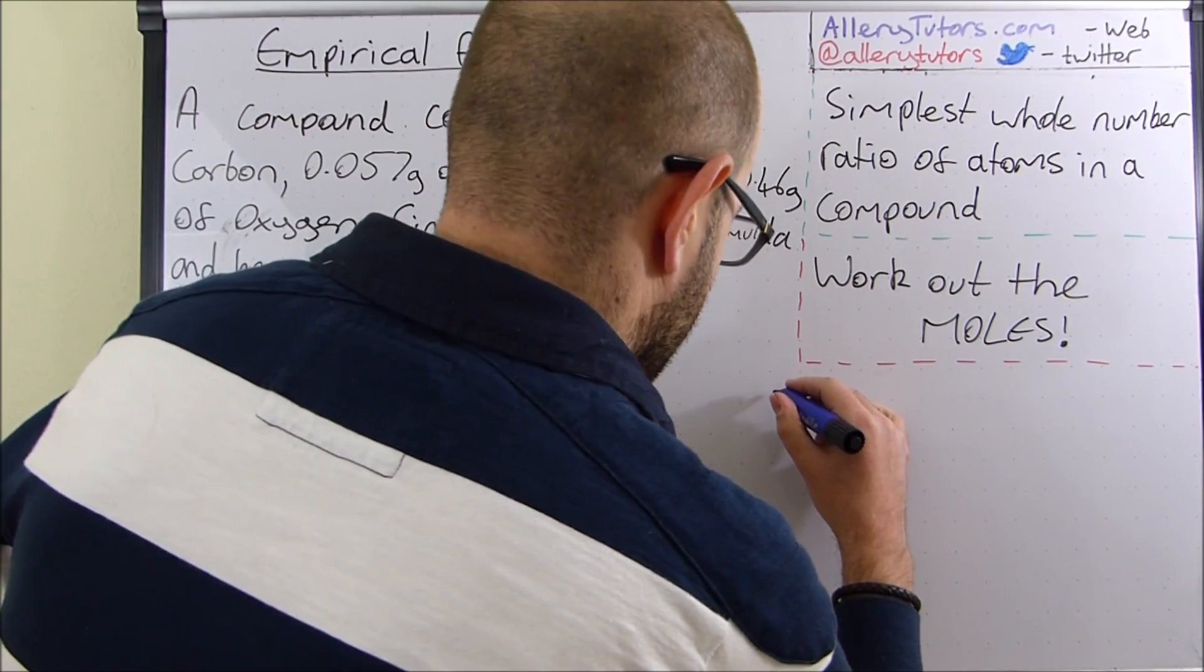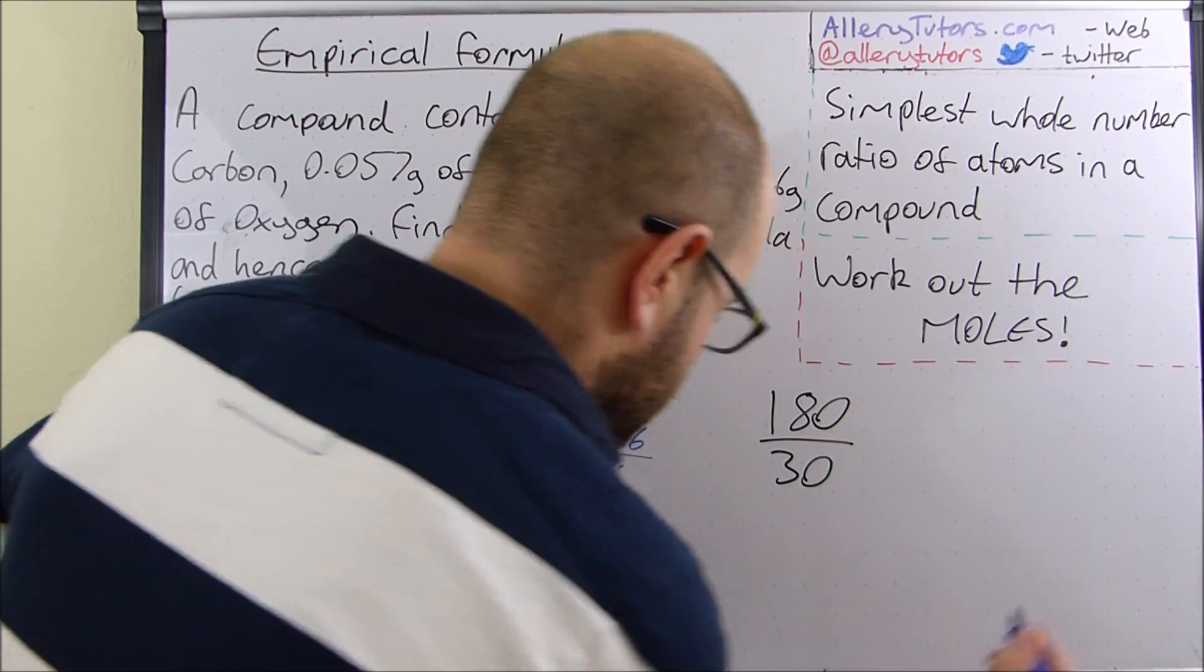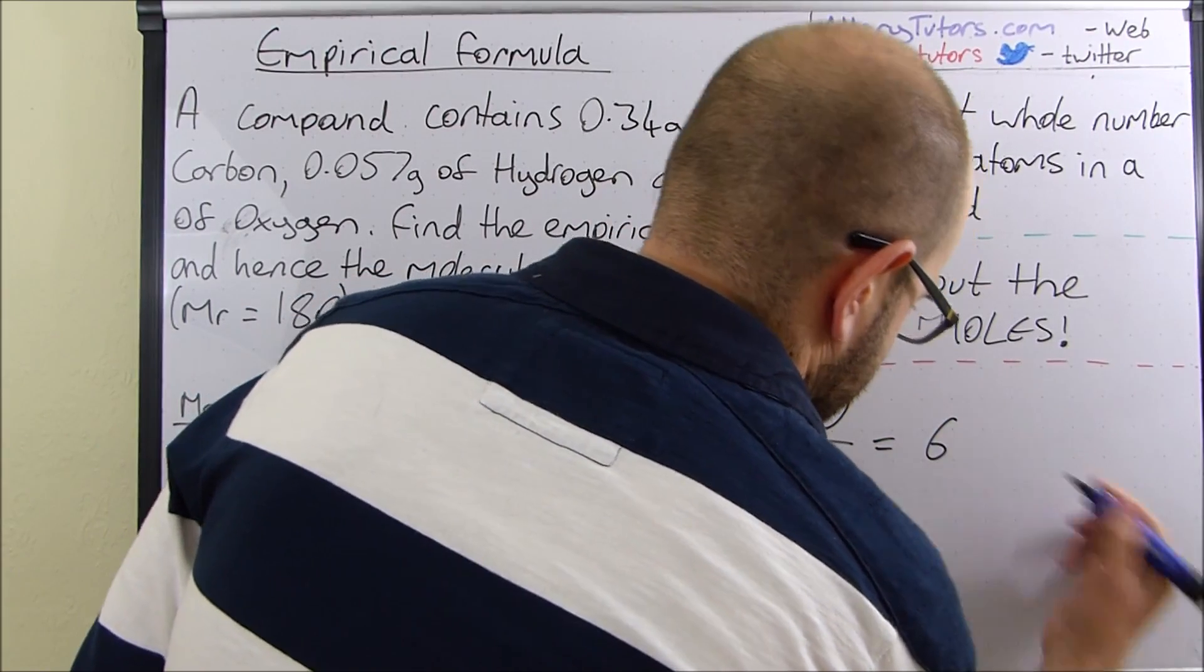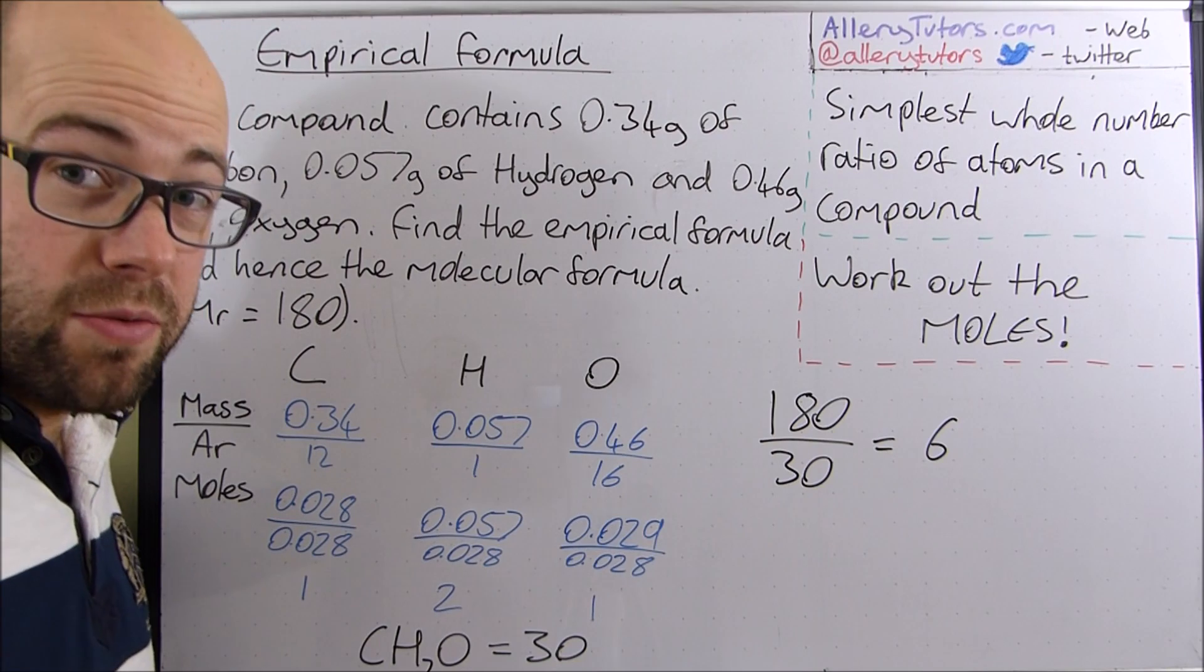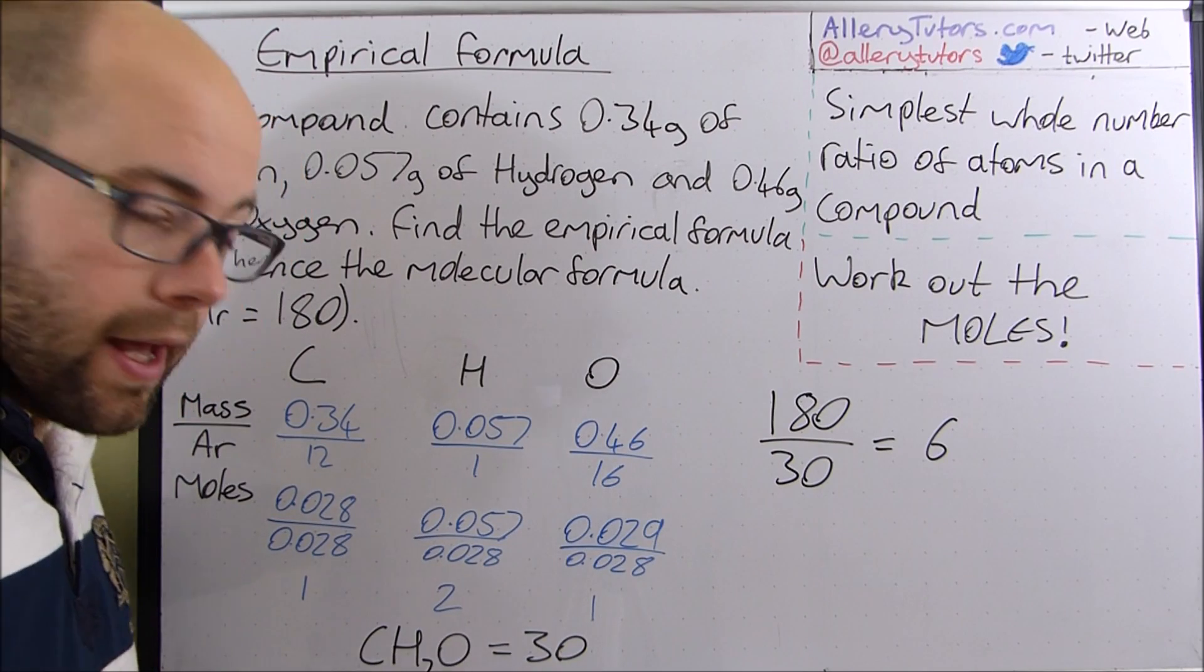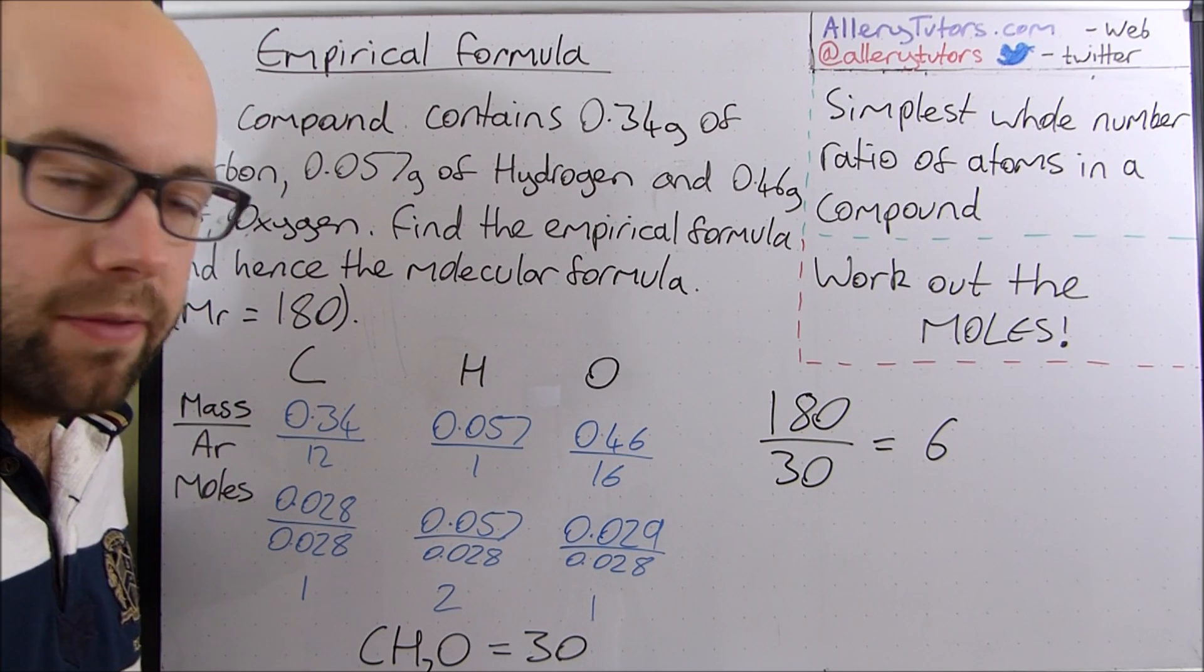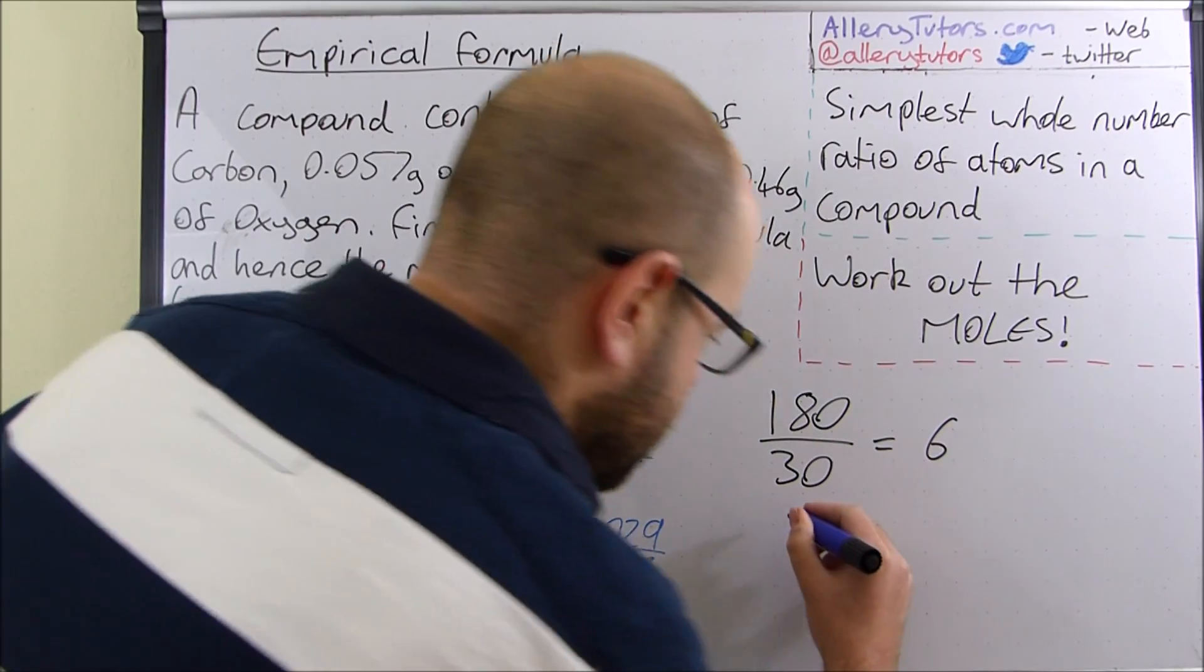So what we do is we do 180, I'm going to divide that by 30 because that's the MR of that and that should come out as 6. That's our multiplier and all we do with this number is we just multiply all the elements in our empirical formula by 6 and then we should work out our molecular formula. So in this case CH2O, that'll be C...